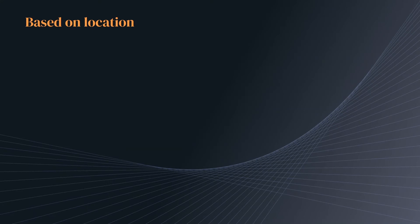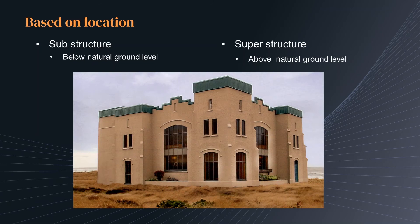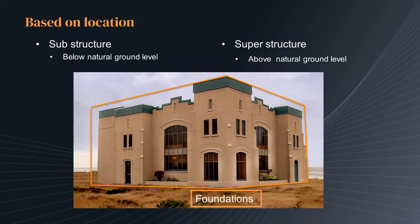The second classification is the classification of building elements based on their location. Building elements can be differentiated based on their location as substructure and superstructure. The substructure of a building is located below the natural ground level, whereas the superstructure elements are found above the natural ground level. In most cases, the majority of building elements are in the superstructure, while the foundation is in the substructure.